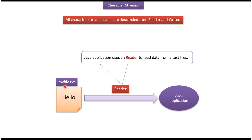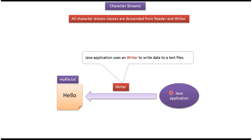Here you can see the file myfile.text. Here you can see the Java application. A Java application can use a reader to read data from text files, and can use a writer to write data to text files. And this is about character streams.